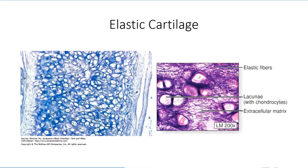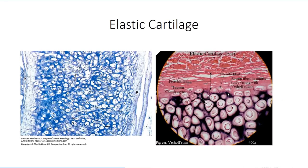Elastic cartilage has a similar structure to hyaline cartilage, but is distinguished by a particularly high concentration of elastic connective tissue. This is found in regions of the body that require certain degrees of both rigidity and flexibility, such as the cartilage making up the external ears and epiglottis. To the naked eye, elastic cartilage typically has a yellowish hue due to the presence of elastin fibers. Under the light microscope, elastic cartilage is difficult to distinguish from hyaline cartilage with normal H&E staining. A Werhof stain helps with this distinction, with elastin fibers staining black.